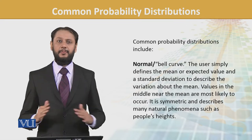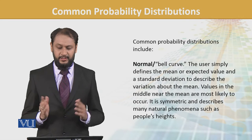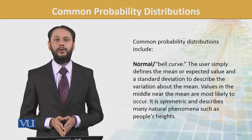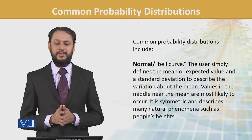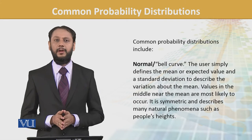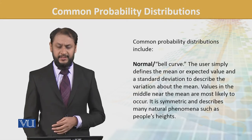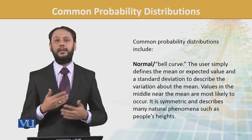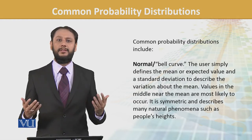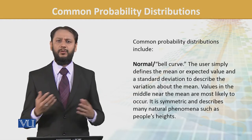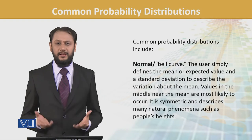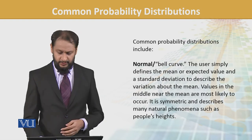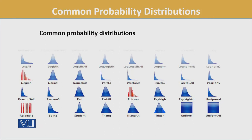Yeh symmetric hota hai, dono side ek jaisi hoti hai, aur normal distribution ka jo curve hai — which is the basic model jis pe hum baat karte rehte hain. Ab dekhte hain ki hamare paas kya tarah ki distributions exist karti hain. We are not going to learn them all, but humein ek understanding chahiye ki yeh kya-kya options ho sakti hain.